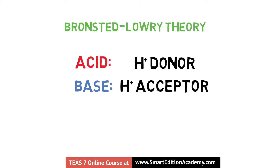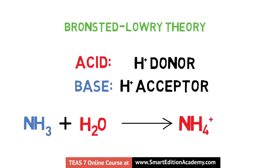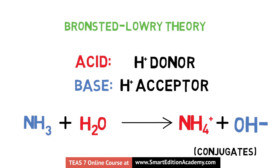Let's look at this following example. Ammonia, NH3, is a base willing to accept a proton to create a conjugate acid of NH4+. Ammonia will accept the proton from the acid — in this instance, water — to increase the hydroxide ion concentration in solution, also considered the conjugate base.